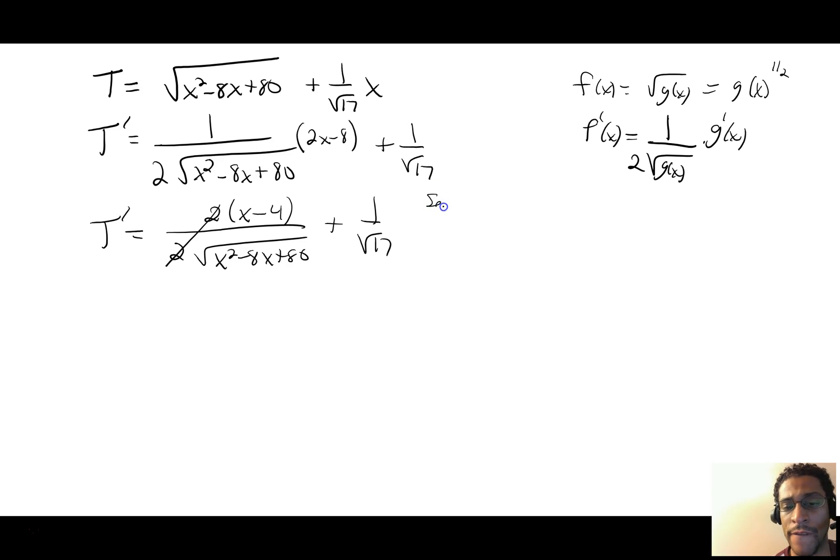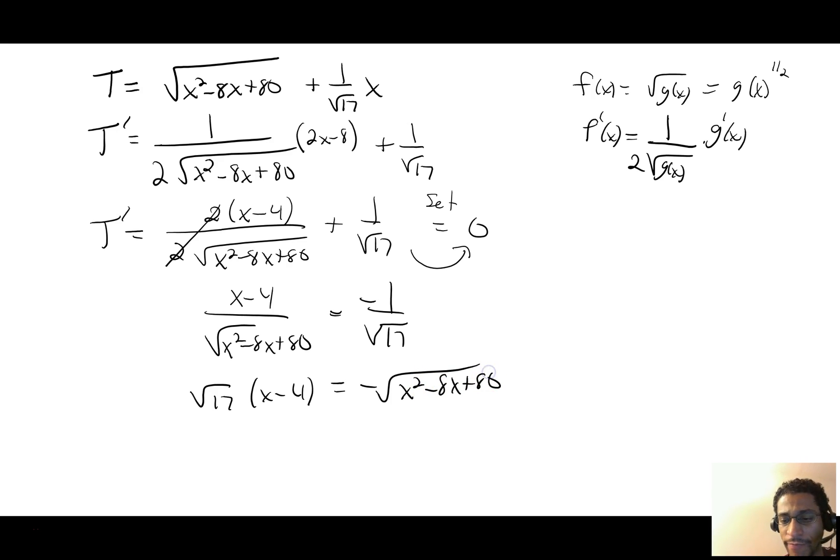We have time is equal to the square root of x squared minus 8x plus 80 plus 1 over root 17 times x. So its derivative is 1 over 2 square roots of x squared minus 8x plus 80, chain rule times 2x minus 8. And then the other term has 1 over root 17 as its derivative. If your function f is the square root of g, your derivative is 1 over the square root of g times g prime of x.